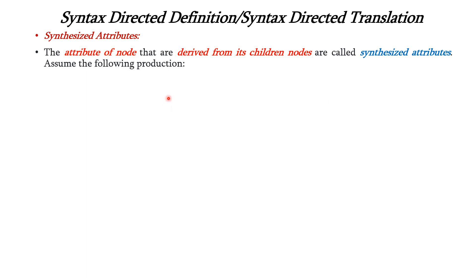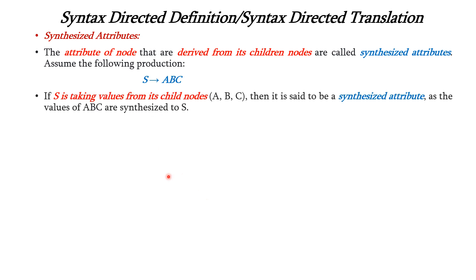For example, consider the production S tends to ABC. Here A, B, C are child nodes and S is the parent node. If S is taking values from its child nodes A, B, or C, then it is said to be a synthesized attribute, as the values of A, B, C are synthesized to S.